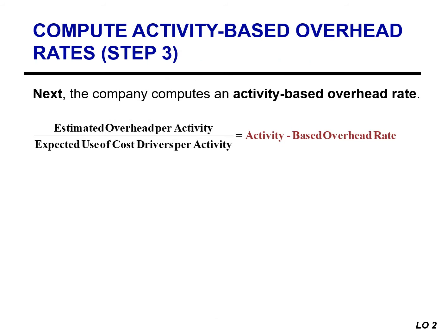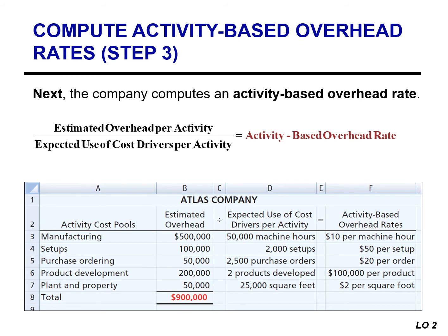In step three, the company computes an activity-based overhead rate for each cost pool by dividing the estimated overhead per activity by the number of cost drivers expected to be used per activity. Atlas computes its activity-based overhead rates using the estimated overhead per activity cost pool — column B — divided by the expected use of cost drivers per activity — column D — to arrive at activity-based overhead rates in column F. These activity-based overhead rates are very similar to the predetermined overhead rate; you're essentially calculating a predetermined overhead rate for each cost pool, but the terminology is activity-based overhead rate.